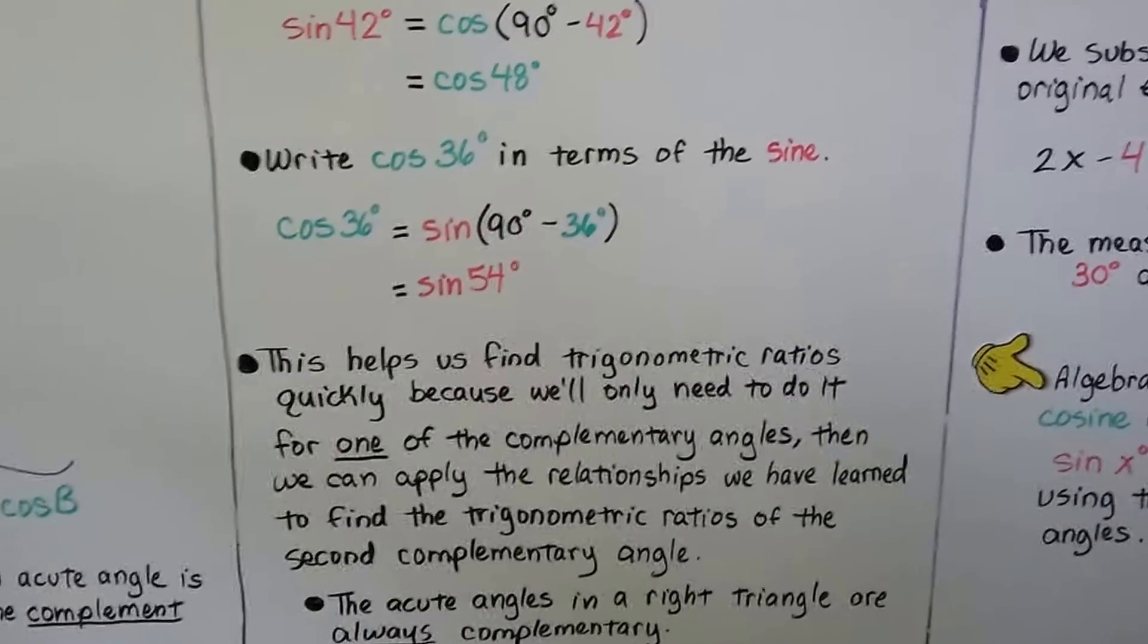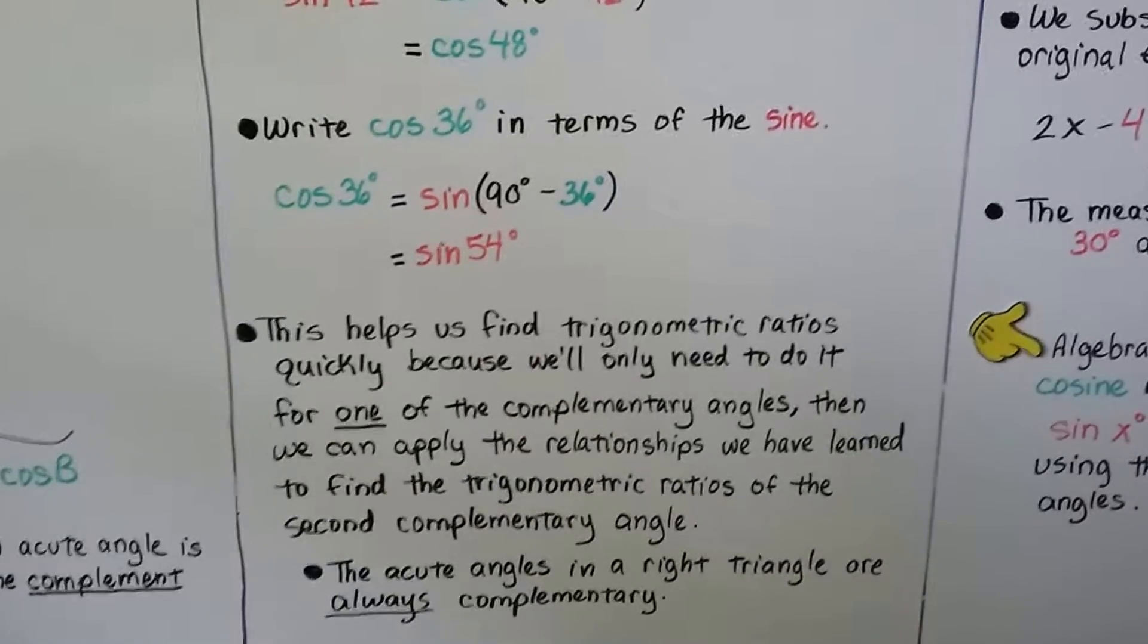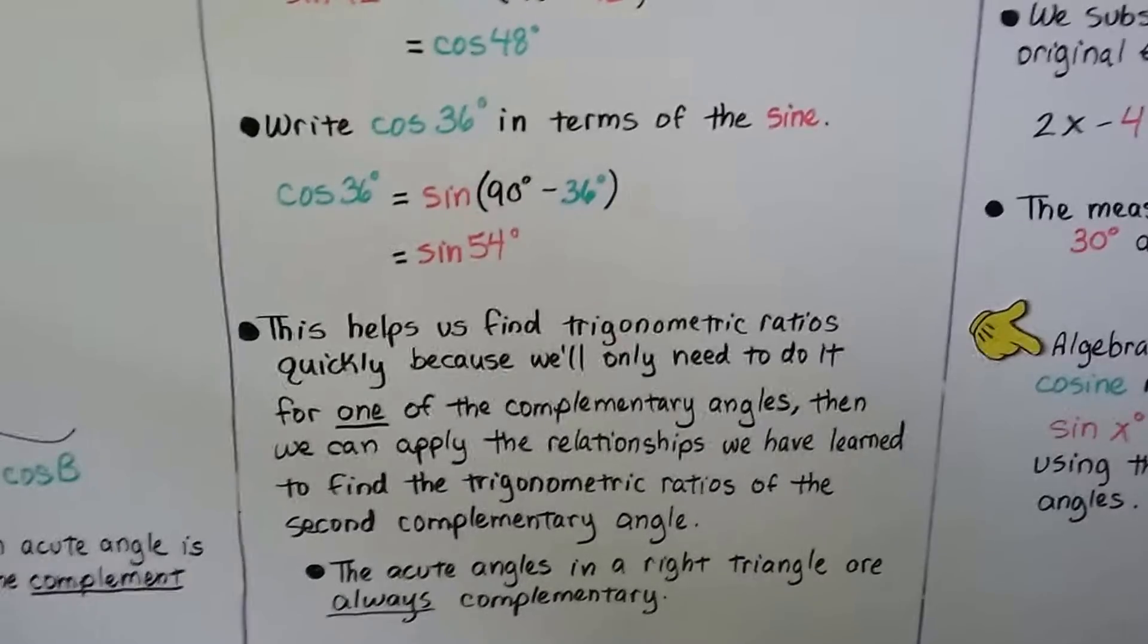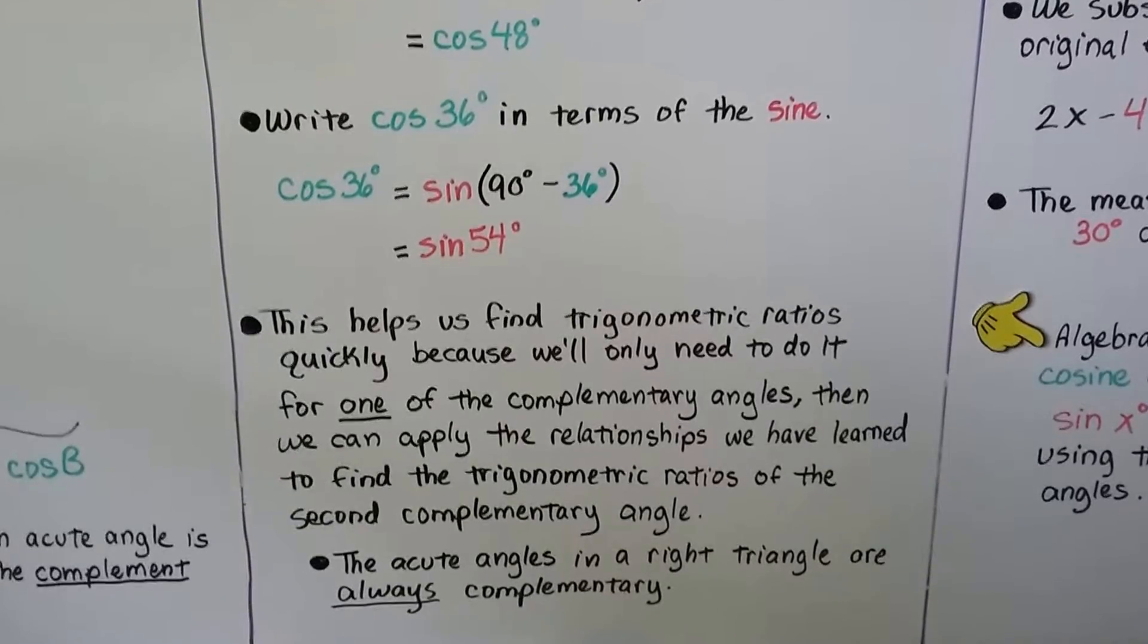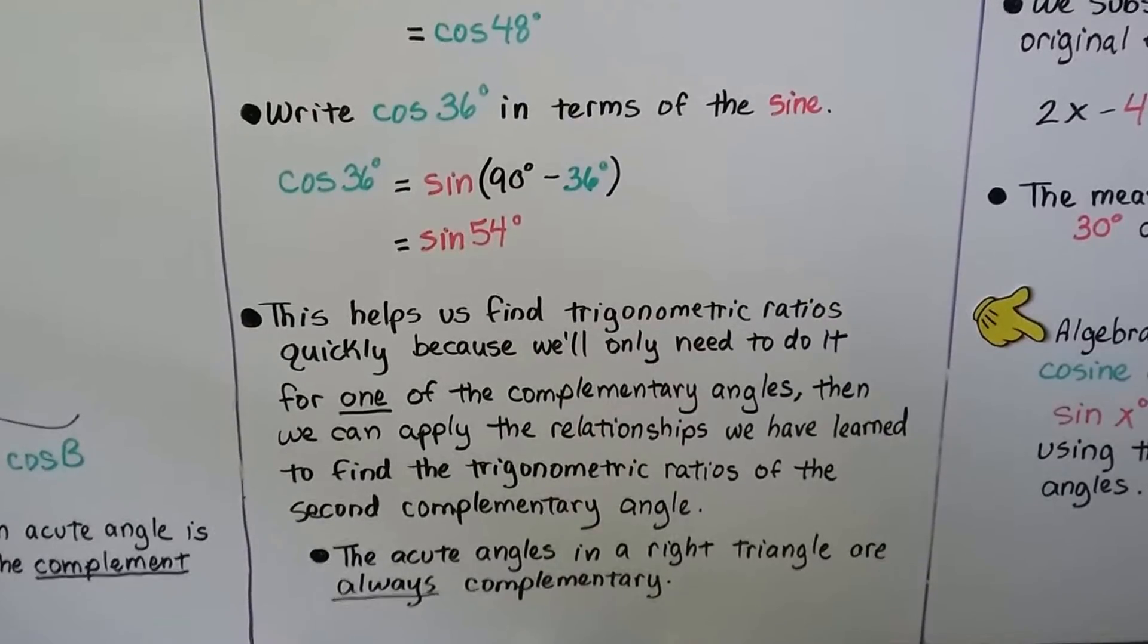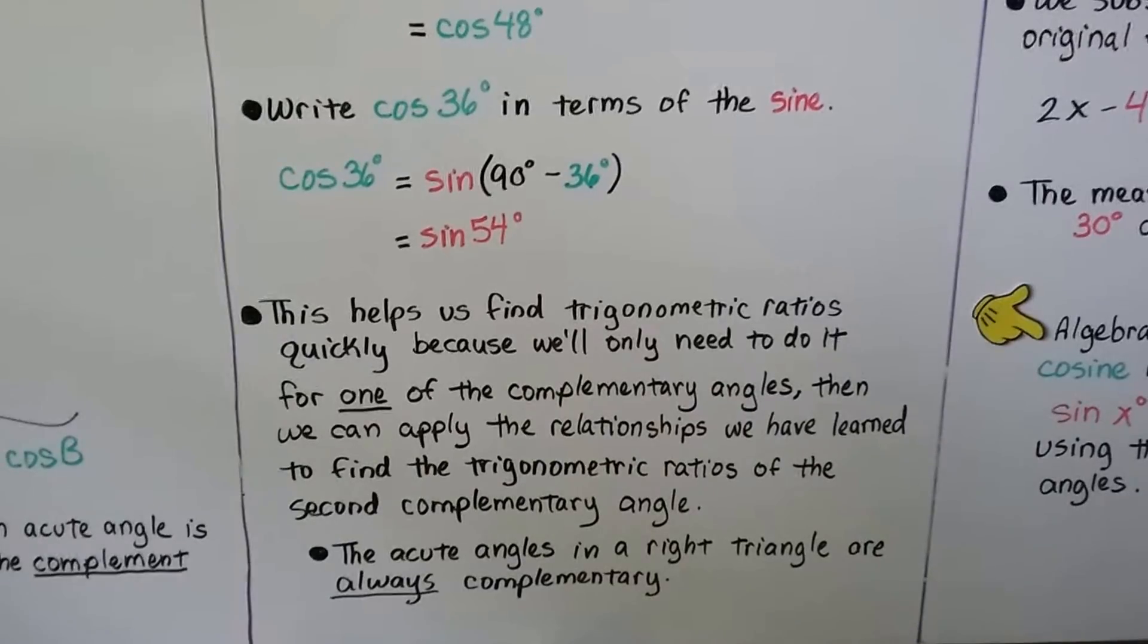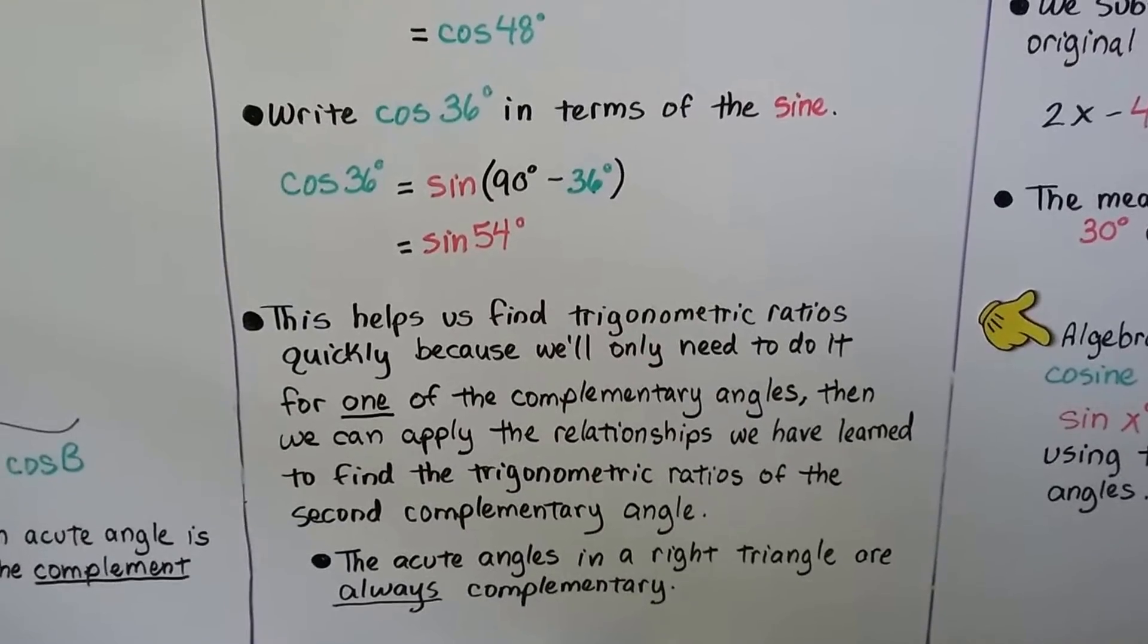And this helps us find trigonometric ratios quickly because we only need to do it for one of the complementary angles. Then we can apply the relationships we have learned to find the trigonometric ratios of the second complementary angle. The acute angles in a right triangle are always complementary.